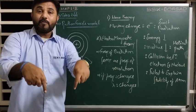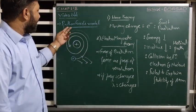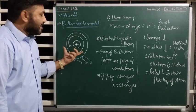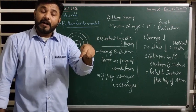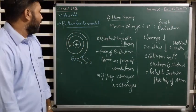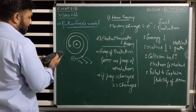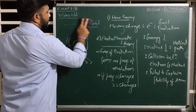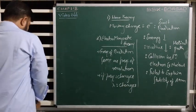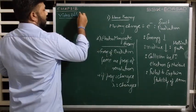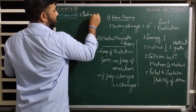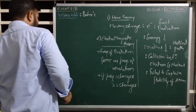Bohr's atomic model was proposed because of the failure of Rutherford's model. To overcome this model's failures, Bohr made some assumptions, and those assumptions are known as Bohr's Hypotheses. So video number 44 is about Bohr's Hypotheses.